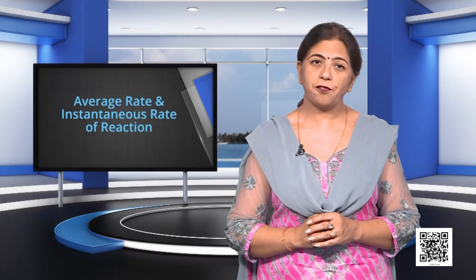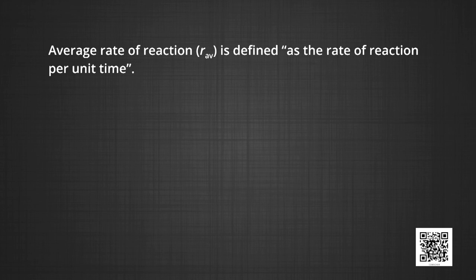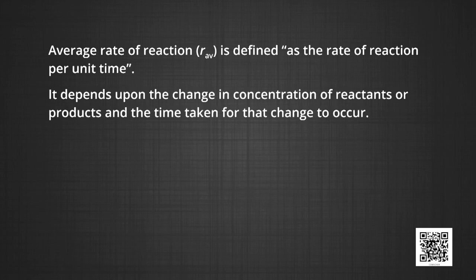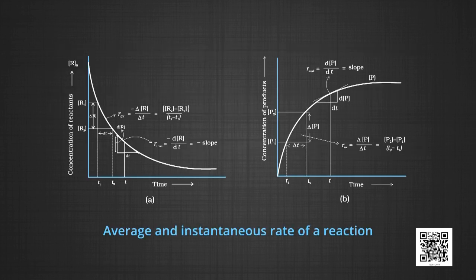Now let me explain the average rate and instantaneous rate of the reaction. Equations 1 and 2 represent the average rate of a reaction. The average rate of reaction is defined as the change in the concentration of the reactants or the products per unit time taken for that change to occur — that is, minus delta R by delta T equals delta P upon delta T. From the graphs you can see: the first one shows the decrease in the concentration of the reactants with the passage of time, and the second graph shows the increase in the concentration of the products with time.